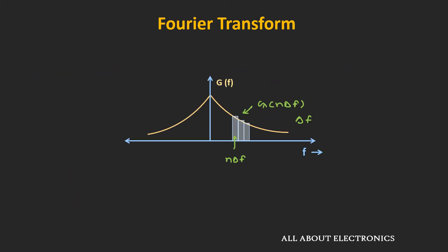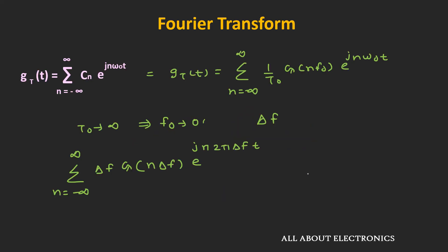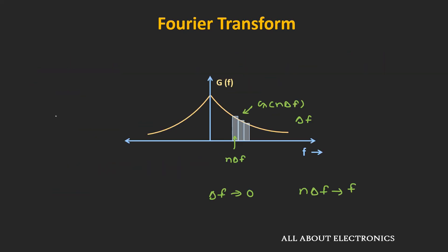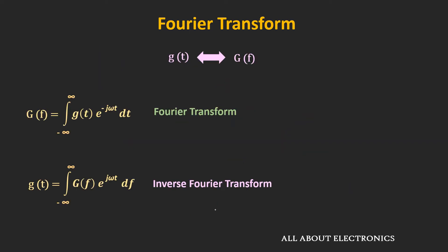Graphically, each small segment represents the frequency n·Δf, and the amplitude at that frequency equals G(n·Δf), while the width of the segment is Δf. As Δf tends to 0, n·Δf becomes the continuous variable f, all the segments merge, and we get a continuous spectrum. When Δf tends to 0 — or equivalently T0 tends to infinity — the summation can be replaced by an integration. And since g(t) equals g(t) as T0 tends to infinity, we get the expression of the inverse Fourier transform: g(t) equals the integral from minus infinity to infinity.